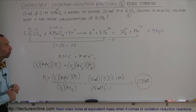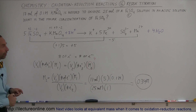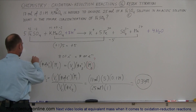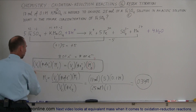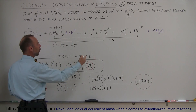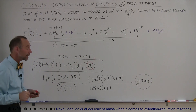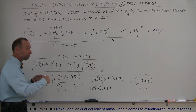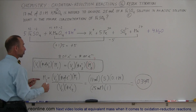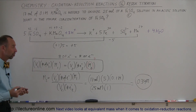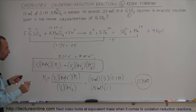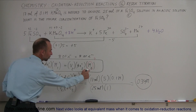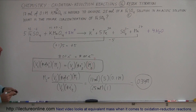So 25 milliliters of 0.34 molar iron sulfate will neutralize the potassium permanganate, and that is how you do it. This is really the best way to think about it: the number of electrons given out by one is equal to the number of electrons received by the other. You set the number of electrons on each side of the equation — accounting for volume and molarity — and when you set those two sides equal to each other, you can solve for any one of the unknowns. In this case, the unknown was the molarity of the iron sulfate.